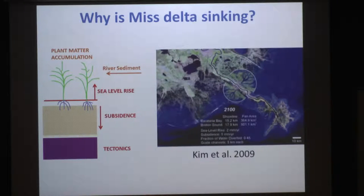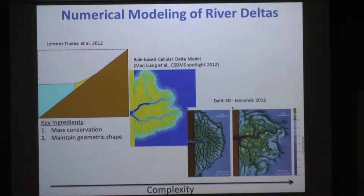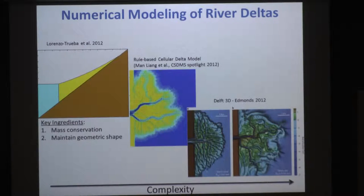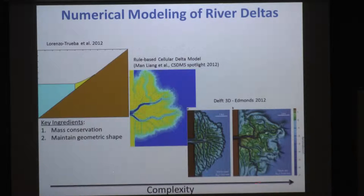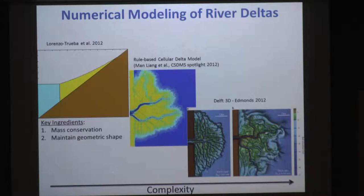One way to better understand these systems is to use numerical models. Due to the wide range of timescales involved in delta evolution, we consequently have a wide range of numerical approaches available — from mass balance approaches in the cross-shore, to rule-based cellular automaton models, up to models such as DELFT3D which couples hydrodynamics and sediment transport in a three-dimensional framework using the shallow water equations.